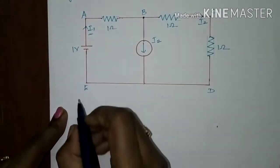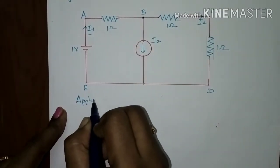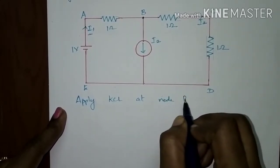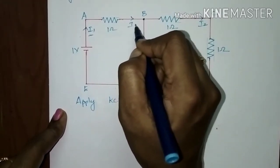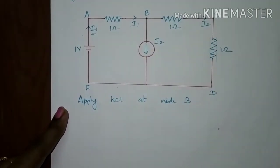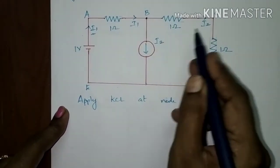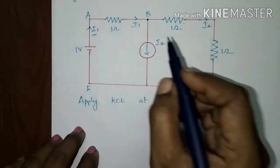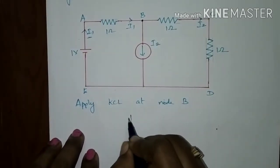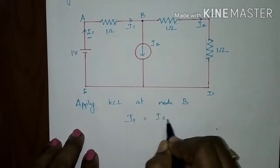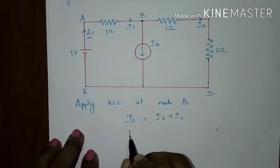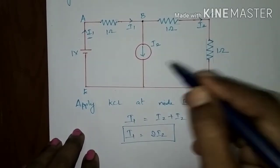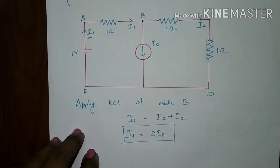Apply KCL at node B. The incoming current is i1 and the outgoing currents are i2 and i2, as represented in the figure. So at node B, the sum of incoming current is i1 and the outgoing current is i2 plus i2. Therefore i1 is equal to 2*i2.